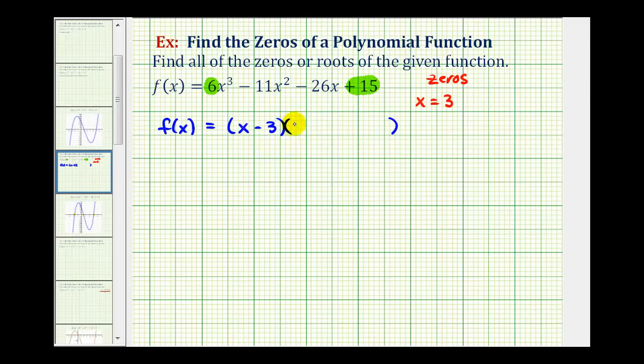So to find this factor here, we can perform long division by dividing by x minus 3, or we can perform synthetic division by using the x value of positive 3. Let's go ahead and use synthetic division. So we'll use positive 3, and then we'll list the coefficients of our function. So we have 6, negative 11, negative 26, and 15.